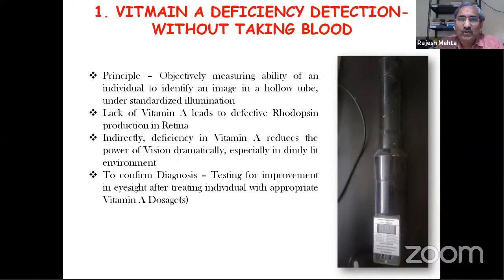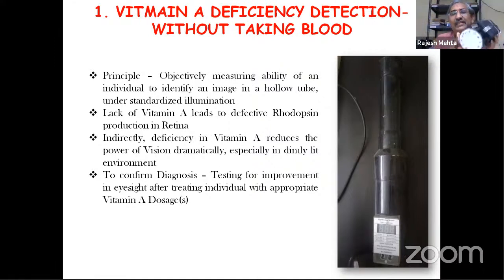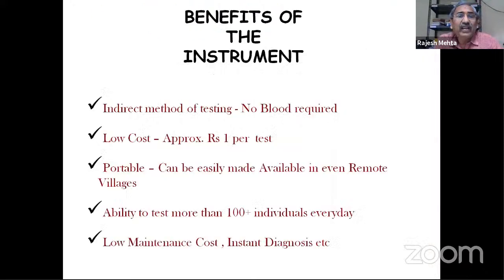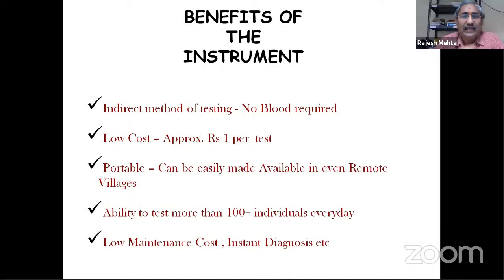This instrument took more than 20 years to develop. With this simple instrument, you increase the light and are able to see various pictures. Depending on the amount of light you require to see a particular picture, you can determine whether you are likely to have vitamin A deficiency — without taking blood. The cost is much less because once you purchase the instrument, the recurring cost is barely less than one rupee per test. It can be taken in a train or bus, kept at RTO offices, schools, colleges, etc. The retest cost is hardly 70 paise.